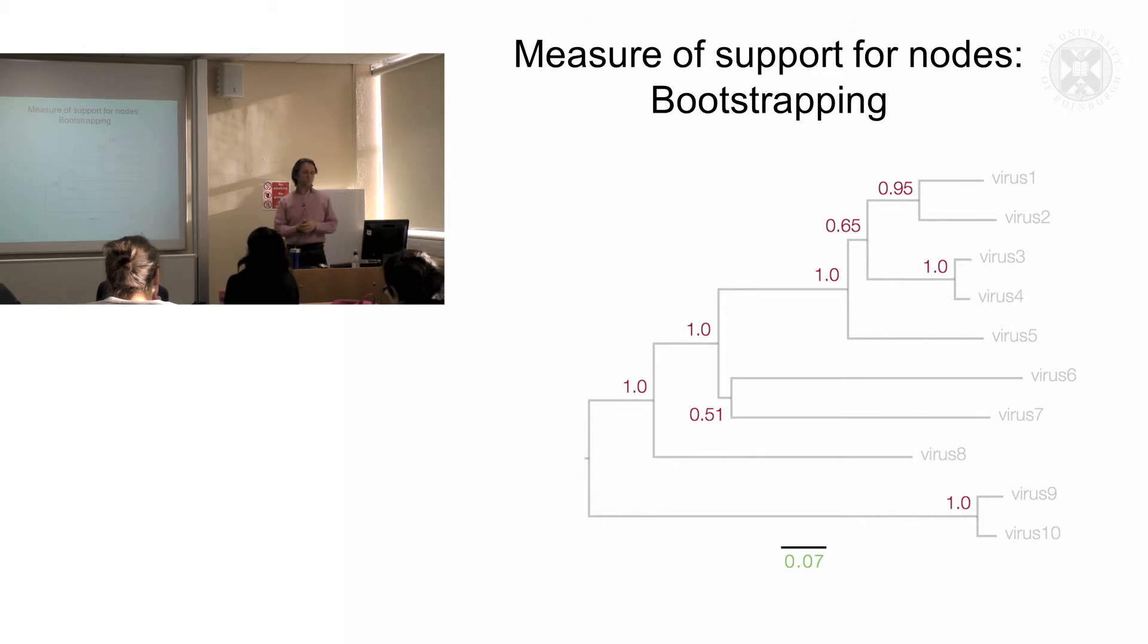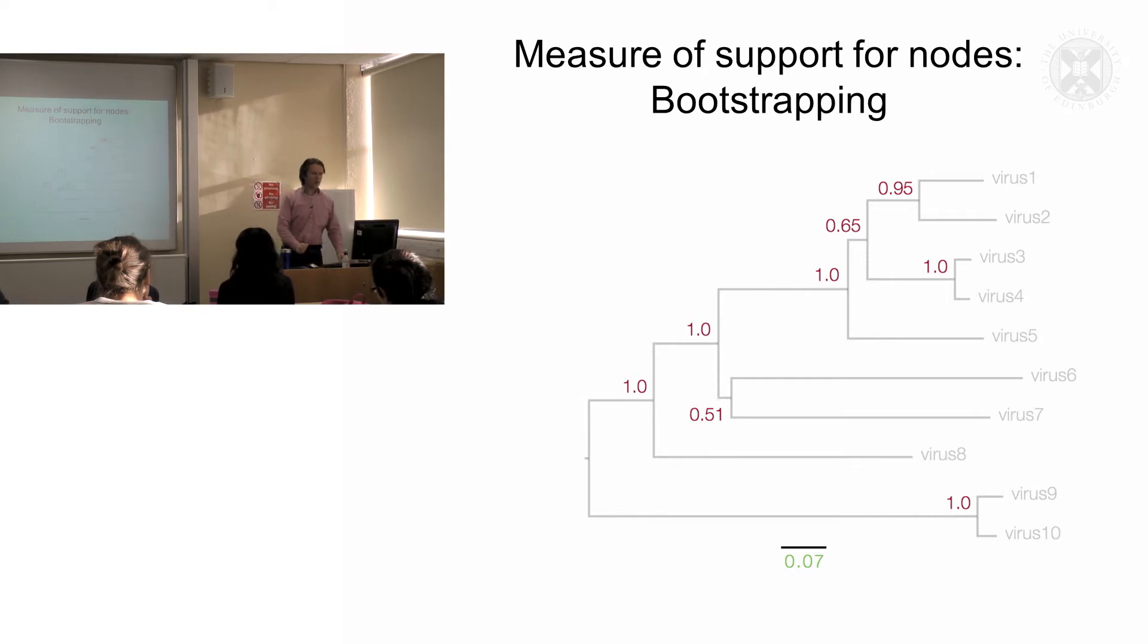Bootstrapping is one way. Another way is by Bayesian posterior values. So for bootstrapping essentially that allows us to get a prediction on the level of confidence. So one is a very high level of confidence in the positioning of that node and the topology of the tree. This is a slightly lower level of confidence associated with it and this is even lower again.